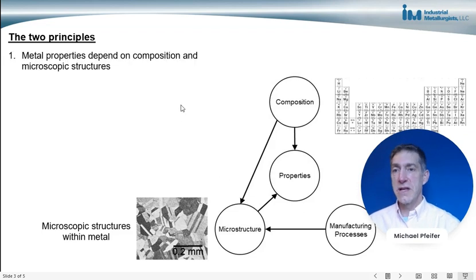The first principle is that metal properties depend on the metal's composition and microscopic structures within the metals. The diagram shows the properties of metals, and the properties are influenced by two things: the composition of the metal—that means the main element in the metal, so for steels it would be iron, for aluminum alloys it would be aluminum, and so on—and it also includes impurities that might be mixed in as well as alloying elements.